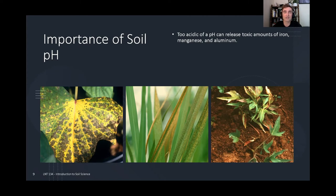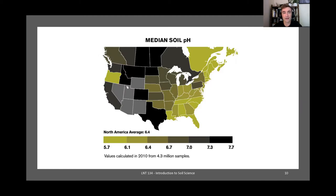Additionally, if the pH is too acidic, you can release toxic amounts of some plant nutrients. Iron, manganese, and aluminum can all become toxic at very low pH values. The images here show symptoms of toxicity from these elements. Your average soil pH will vary by location, largely as a factor of your climate — how much rainfall you have — as well as geography, parent material, plant cover, and biological activity.